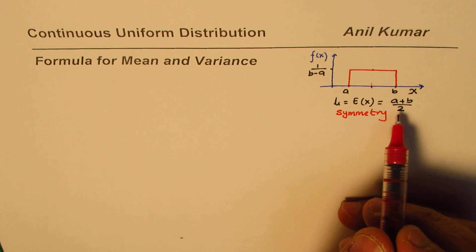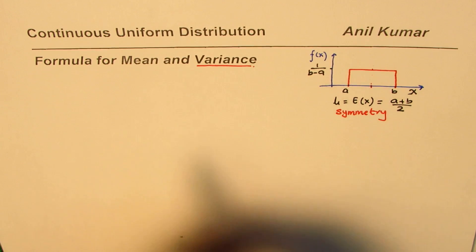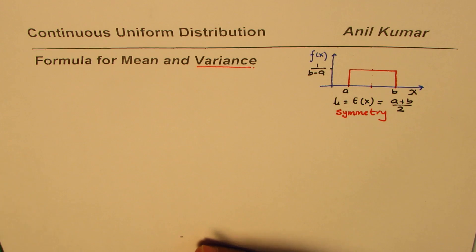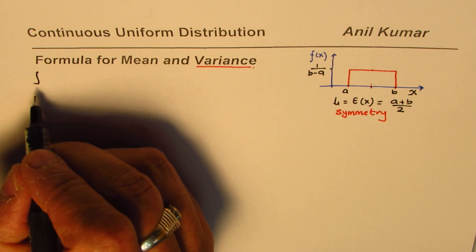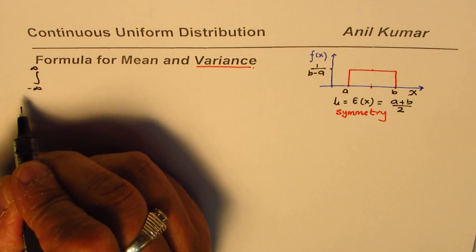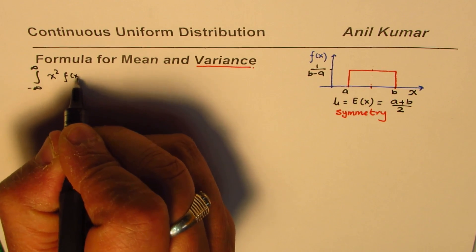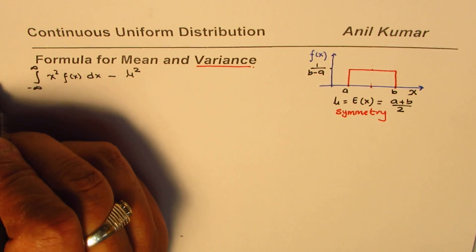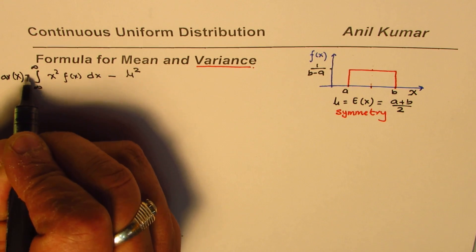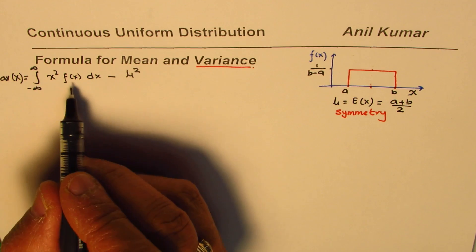We have already derived the mean formula using calculus in another video. Now we will concentrate on variance. For a continuous distribution, the variance is defined as the integral from minus infinity to plus infinity of x² times f(x) dx, minus the mean squared. That is, the difference of the mean of squares and the square of the mean.